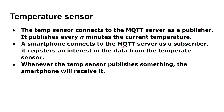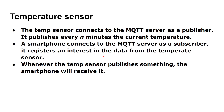A smartphone might connect to the same MQTT server as a subscriber and register interest: 'I'm interested in data from that temperature sensor.' Then whenever the temperature sensor publishes something, the smartphone will receive it because the MQTT server broker makes sure that everyone registered an interest in that topic will receive that data. So the messages only go to the devices that want to hear about them.